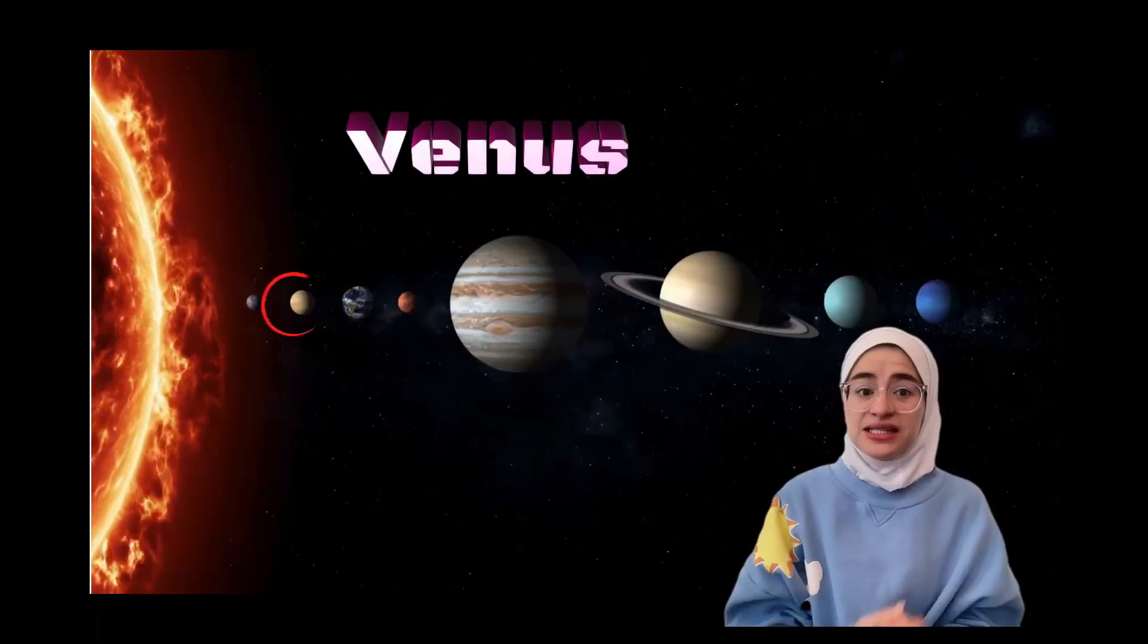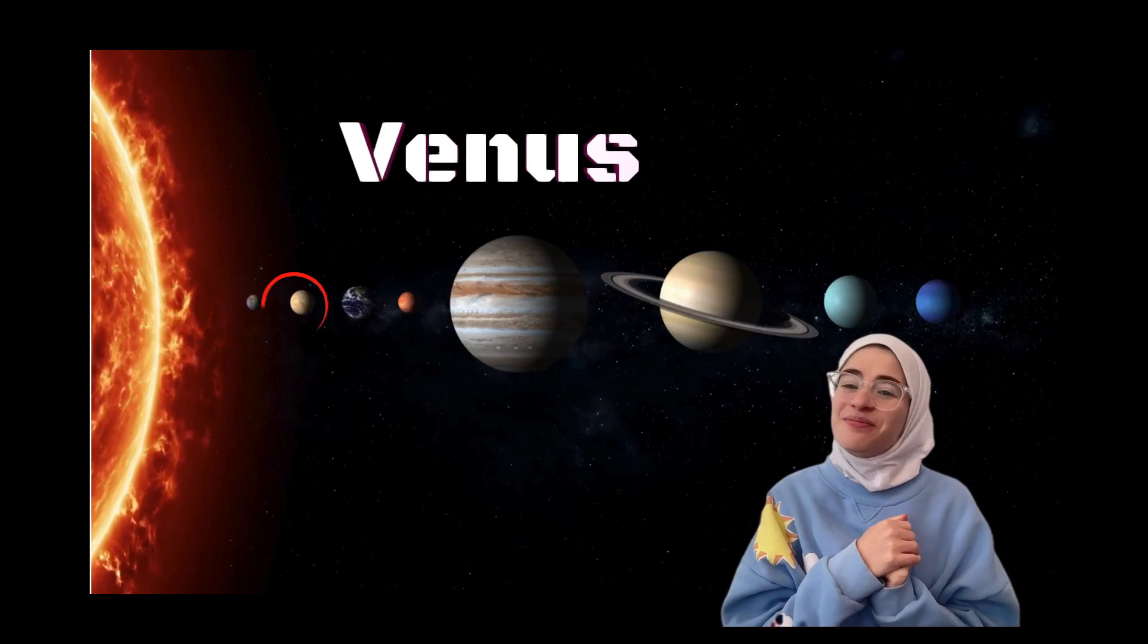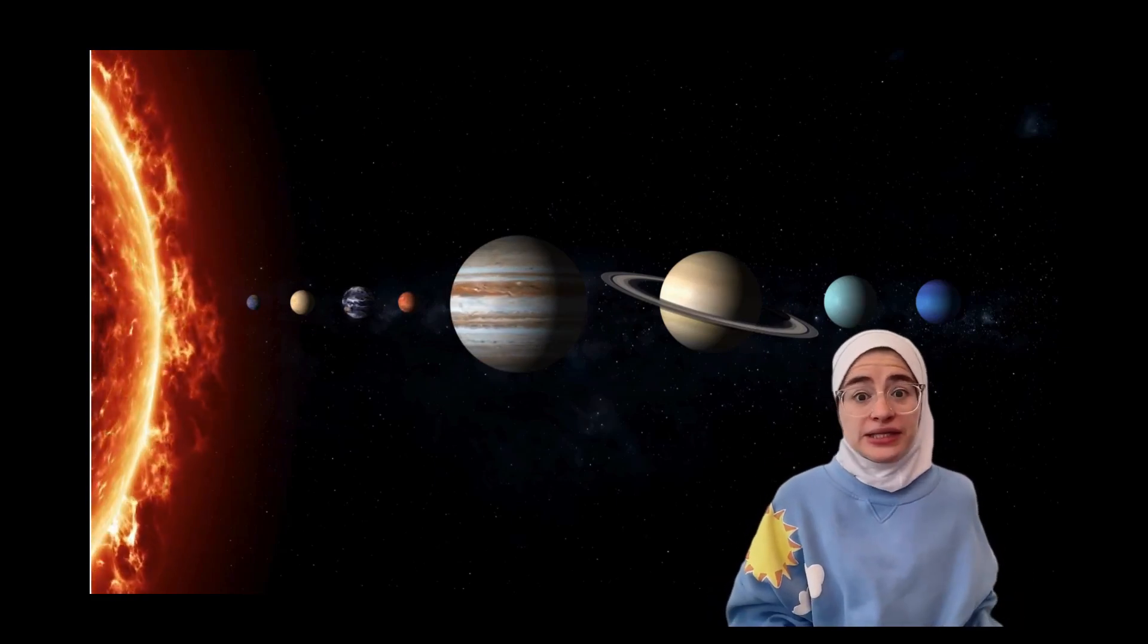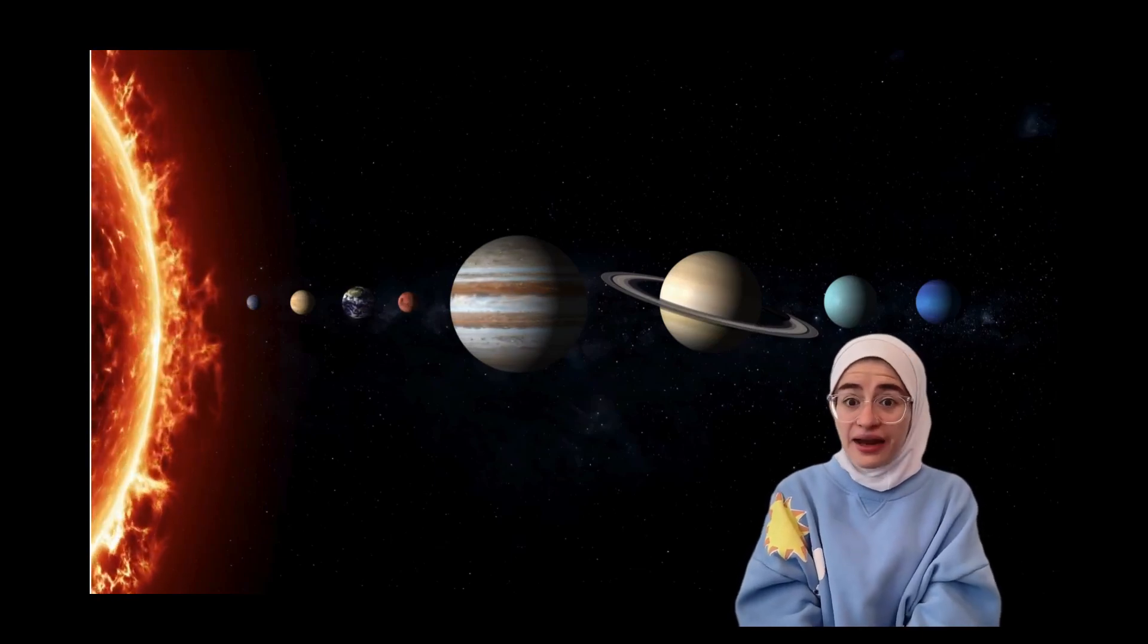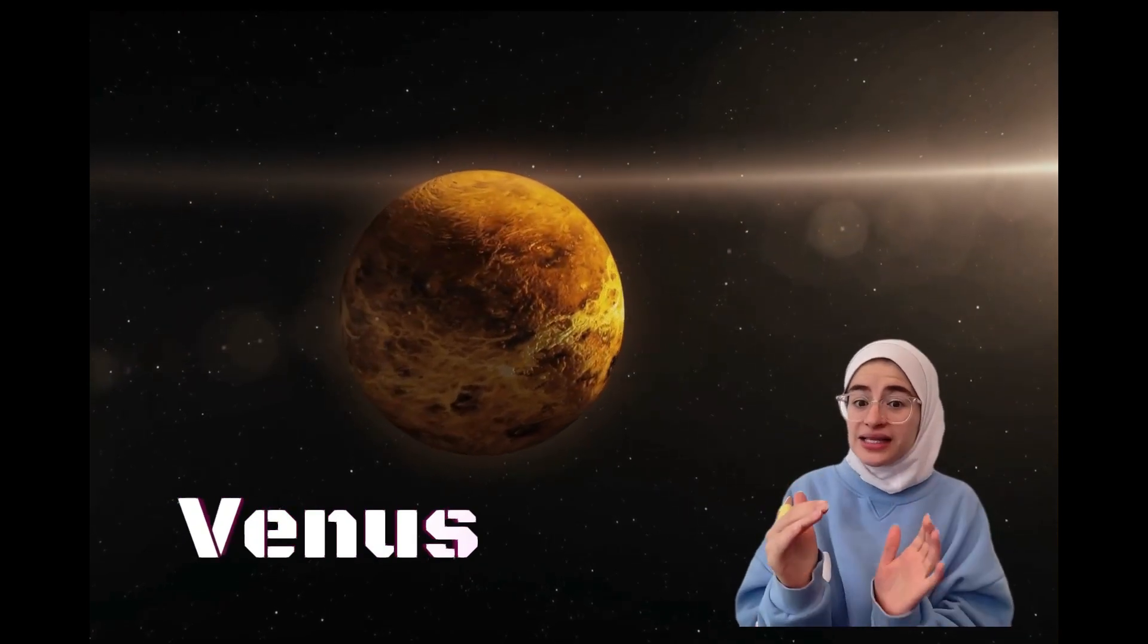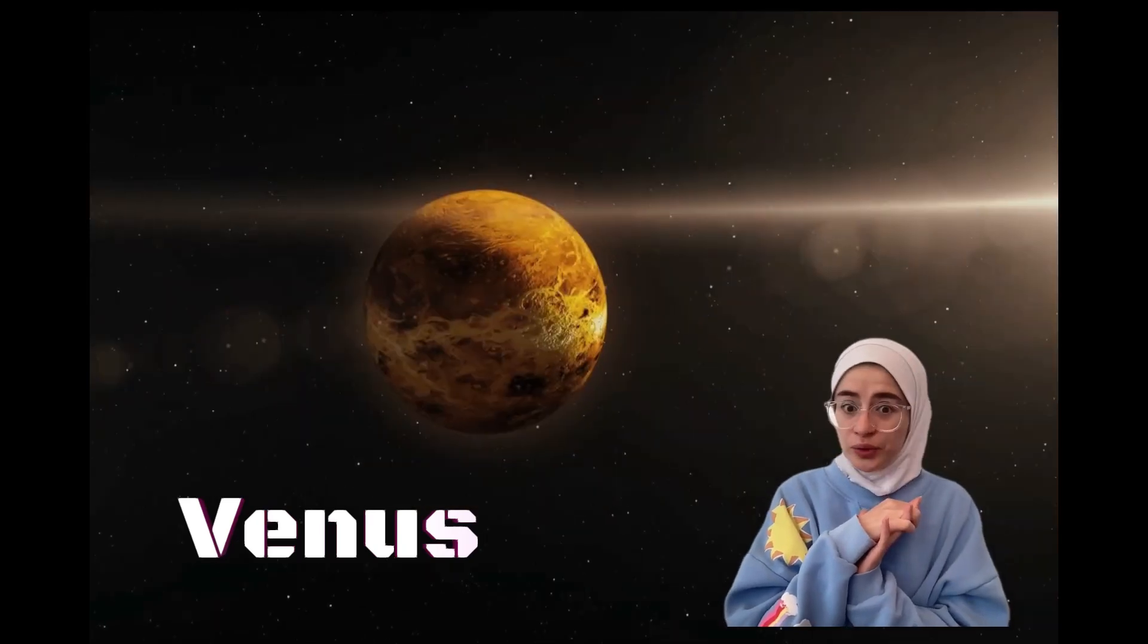Venus is the second planet from the sun. Venus, often seen as the bright evening star, is a unique planet with a backward spin. It's super hot, even hotter than Mercury, because of its thick atmosphere trapping heat like a blanket. Even though it's similar in size to Earth, it has no moons.